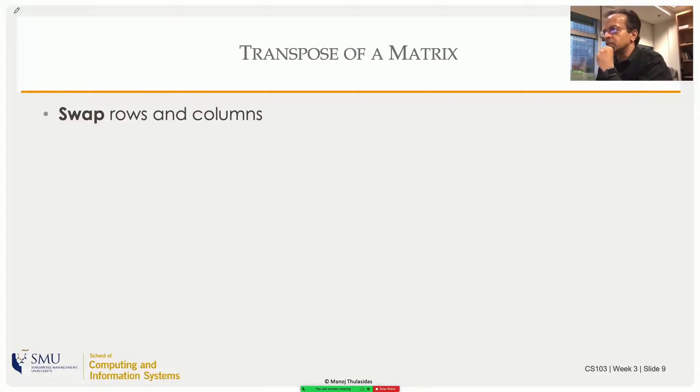Transpose is a fairly easy concept. What you're doing is just swapping rows and columns. If you have a matrix of m rows and n columns, if you transpose it, then you have n rows and m columns. Whatever columns you had in A will become rows in A transpose, and whatever rows you had in A will become columns in A transpose. The numbers will just swap.